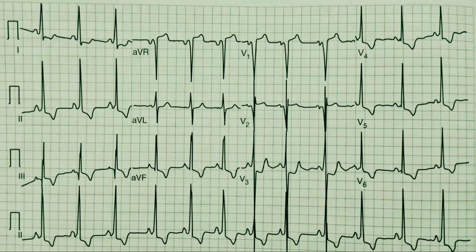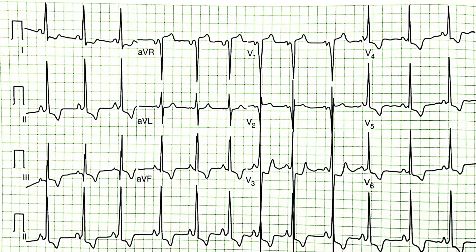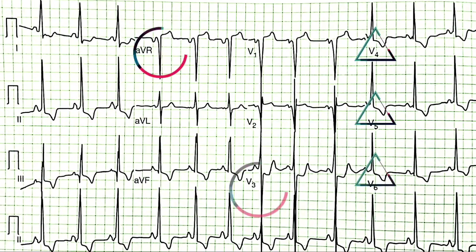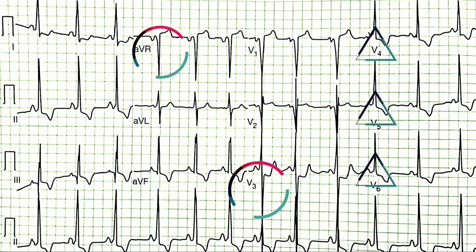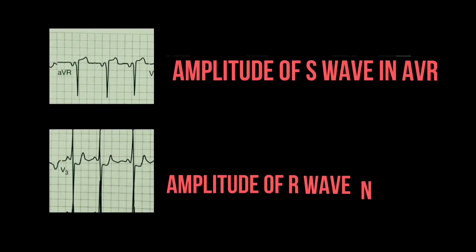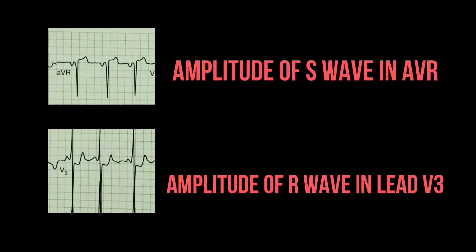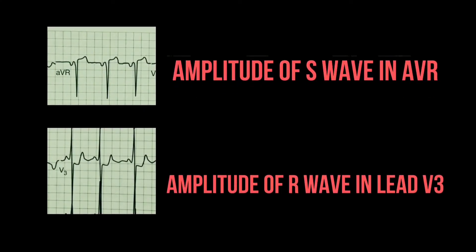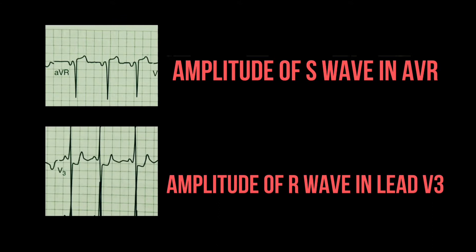Now, have a look at this ECG — what are these findings suggestive of? Have a look at lead AVR and lead V3. The amplitude of the S and R waves in the corresponding leads is abnormally increased.